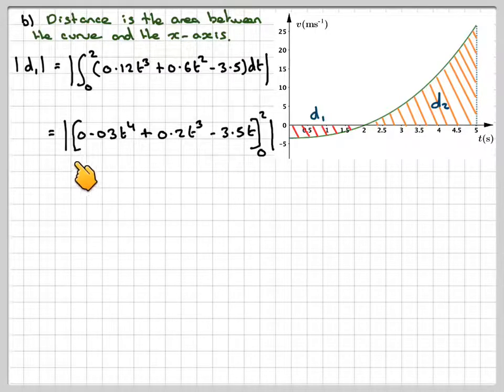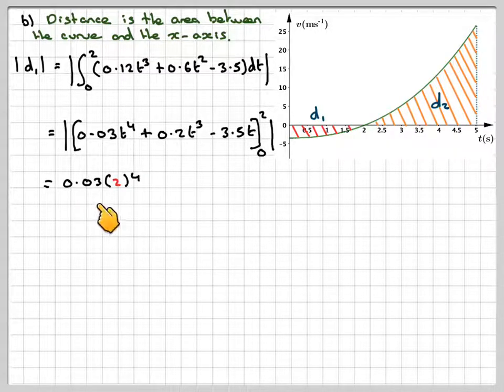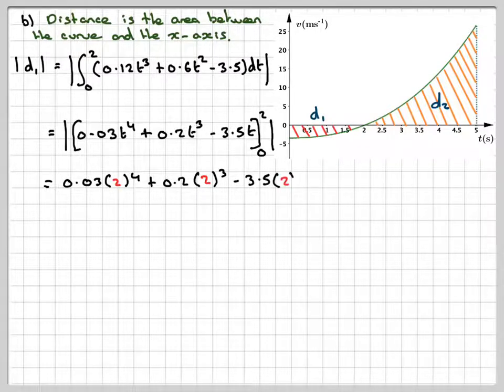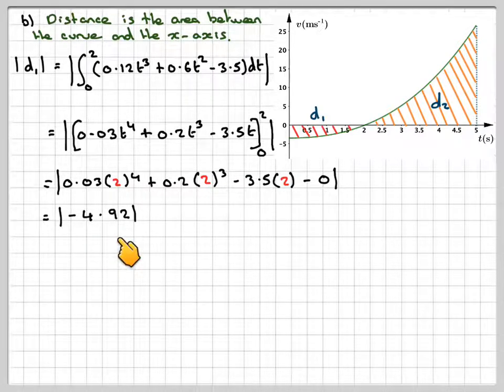We expect the bit in the middle to come up to be negative, but we'll make it positive. So that will be 0.03 times 2 to the 4 plus 0.2 times 2 cubed minus 3.5 times 2. Now if we put 0 in all these, we will get 0, so we're just going to take away 0. And that will give me minus 4.92, but we'll just take the positive value for the total distance.